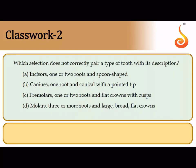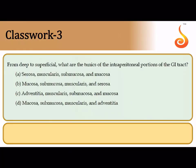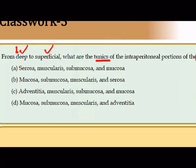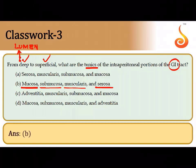Which pairing of tooth type and description is incorrect? Incisors have only one root, not two — they have a spoon-shaped structure and a single root anchoring them to the alveolar jaw socket. Regarding the layers of the GI tract wall from deep to superficial: the innermost layer facing the lumen is the mucosa, then submucosa, then muscularis externa, and the outermost thin squamous layer is the serosa.